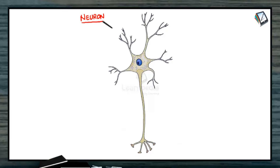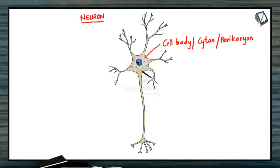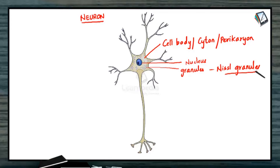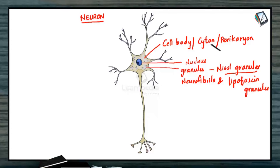The first part is the cell body, also known as the cyton or perikaryon. It consists of the cytoplasm, and within the cytoplasm it has the nucleus and a lot of granules — the Nissl granules. These Nissl granules actually represent the rough endoplasmic reticulum, which are sites for protein synthesis. The cell body also has neurofibrils and lipofuscin granules. A group of these cell bodies present in the central nervous system is referred to as a nucleus, whereas in the peripheral nervous system it is referred to as the ganglion.